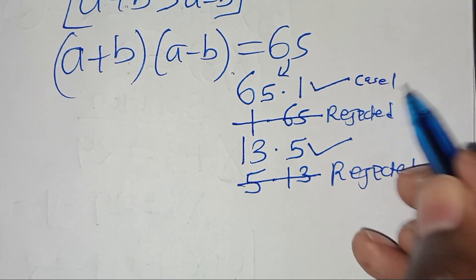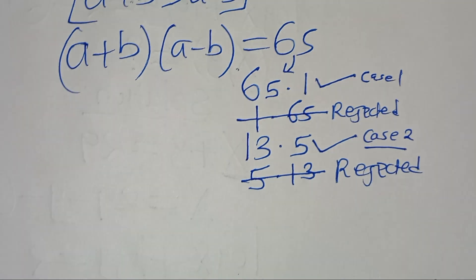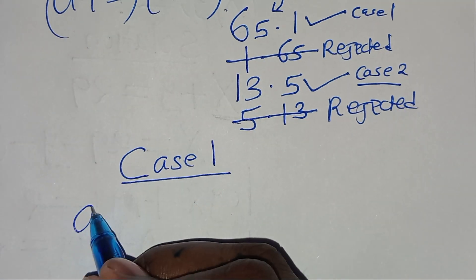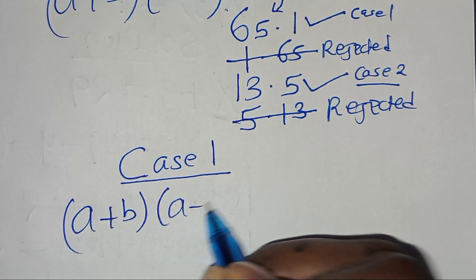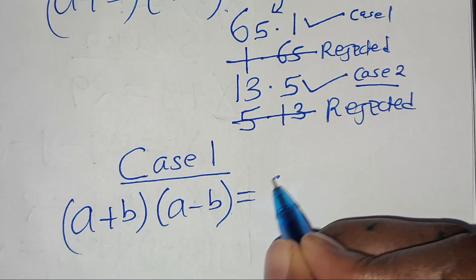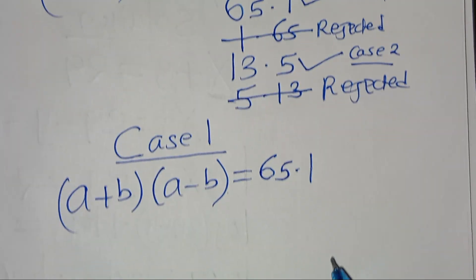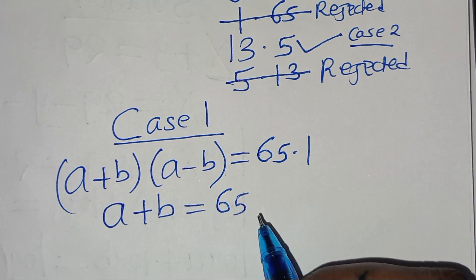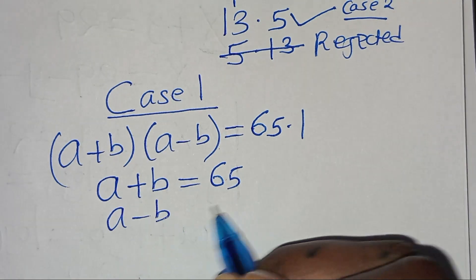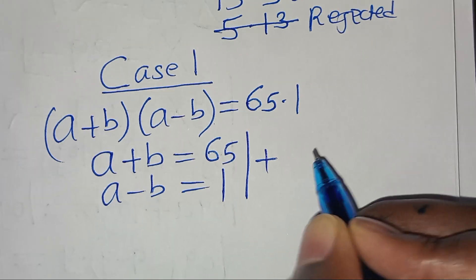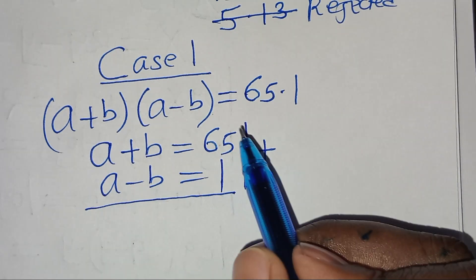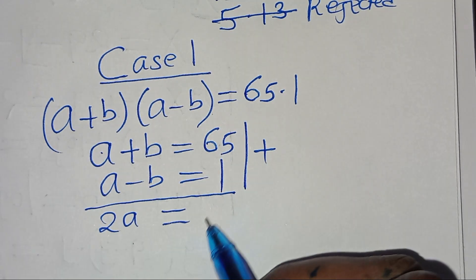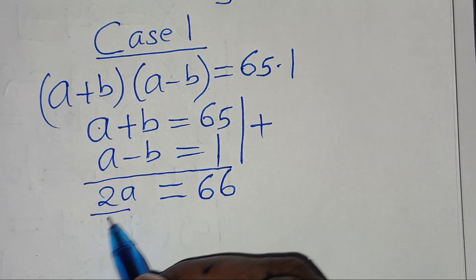In case 1, we have a plus b multiplied by a minus b equal to 65 times 1. This gives a system of equations: a plus b equals 65, and a minus b equals 1. Summing these two equations, 2a equals 66. Dividing both sides by 2, the value of a is 33.